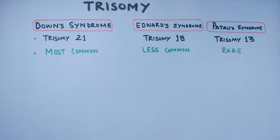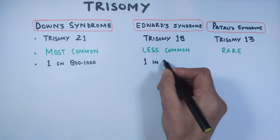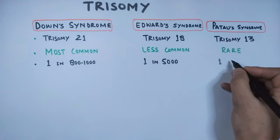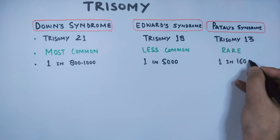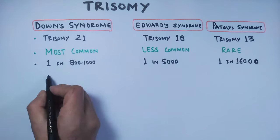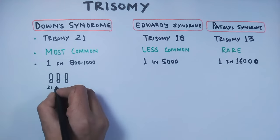If we talk about the frequency of these genetic disorders, Down syndrome occurs in one in a thousand individuals, Edwards syndrome occurs in one in five thousand individuals, and Patau syndrome occurs in one in sixteen thousand individuals, which is very rare. All three are trisomy genetic disorders.